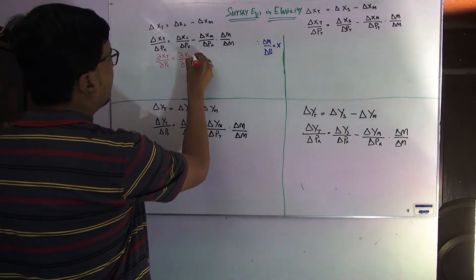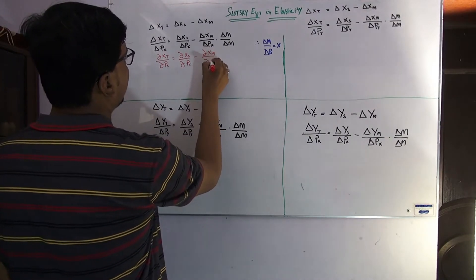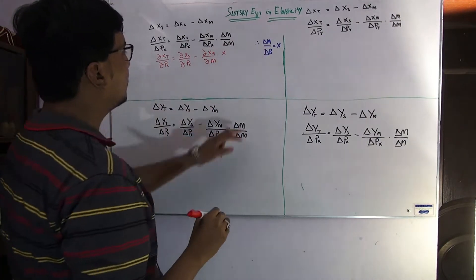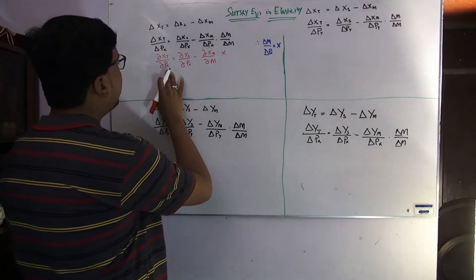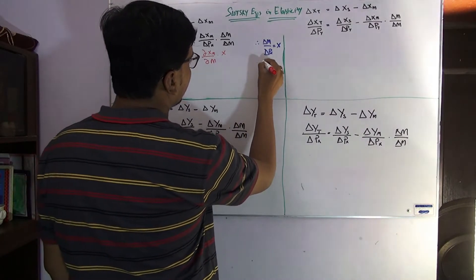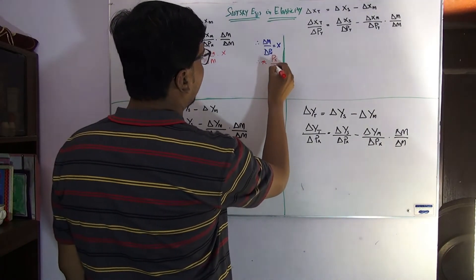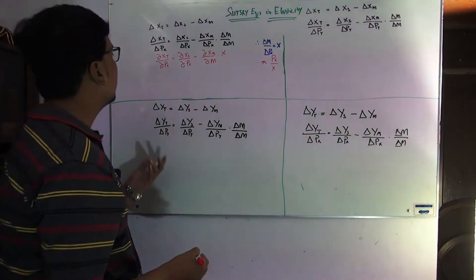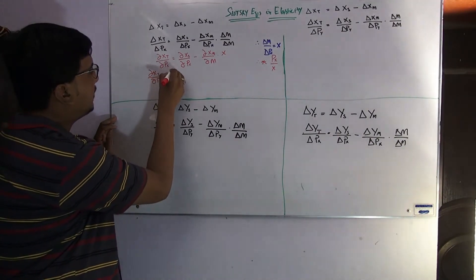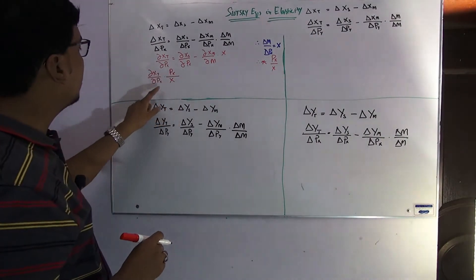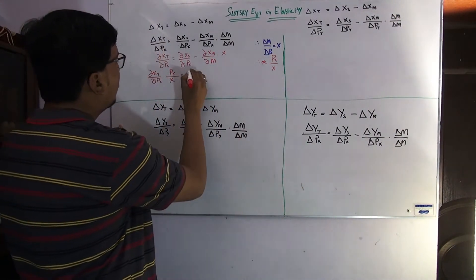We have the substitution effect: change in X over change in Px. Then for the income effect: change in X over change in income. Now we multiply the whole equation by Px over X. So on the left side we have the change in X over change in Px multiplied by Px over X, which gives the own price elasticity.